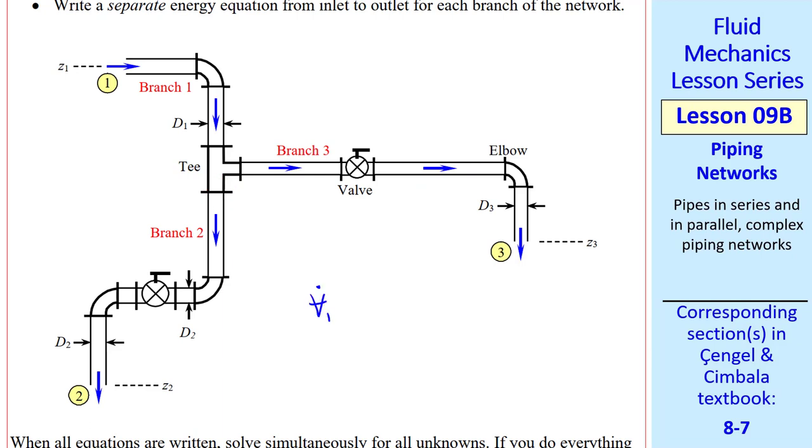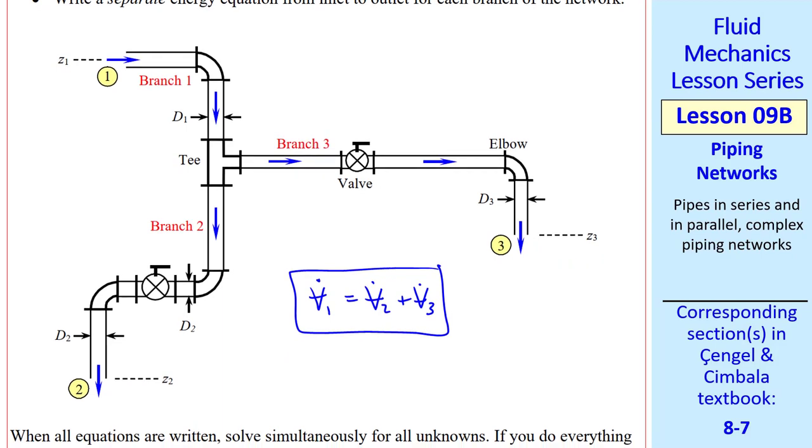How do we analyze such a problem? Well, since branch 1 splits into branches 2 and 3, we know that V dot 1 equal V dot 2 plus V dot 3, but in general we can't say that the pressure drop through these two branches is the same, because they don't connect, and the pressure here may be different from the pressure here, as is the elevation. So I'll show you a trick to solving these problems.